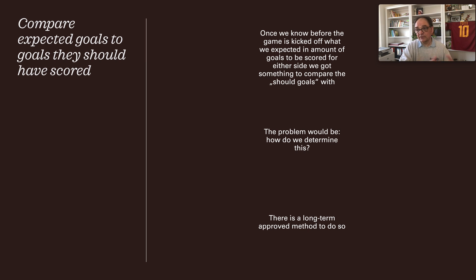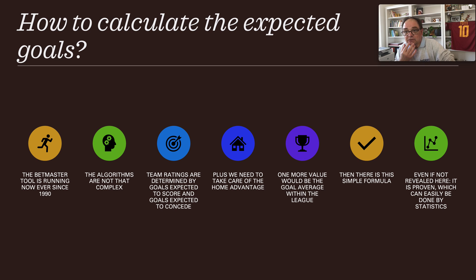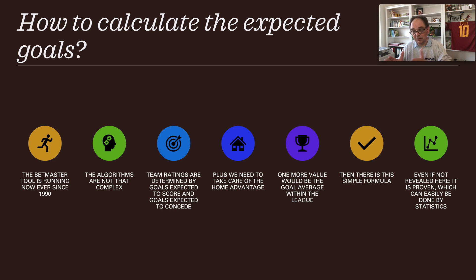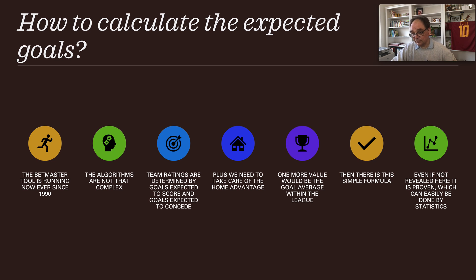The problem is: how do we determine expected goals? There is a long-term approved method. The Batmaster tool has been running since 1990, successfully. The algorithms are not that complex — team ratings are determined by goals expected to score and goals expected to concede, based on their scoring average across games, adjusted accordingly. We also account for home advantage, which adds some complexity, plus the goal average within the league. There is a simple but proven formula, validated through statistics over all these years.